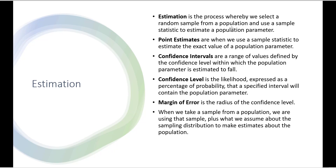When we take a sample from the population, we're using that sample plus what we can assume about the sampling distribution to make estimates about the population. The main point of taking a sample is so that we can generalize or infer something about that larger population of interest, and this estimation process using confidence levels and confidence intervals is how we do that.